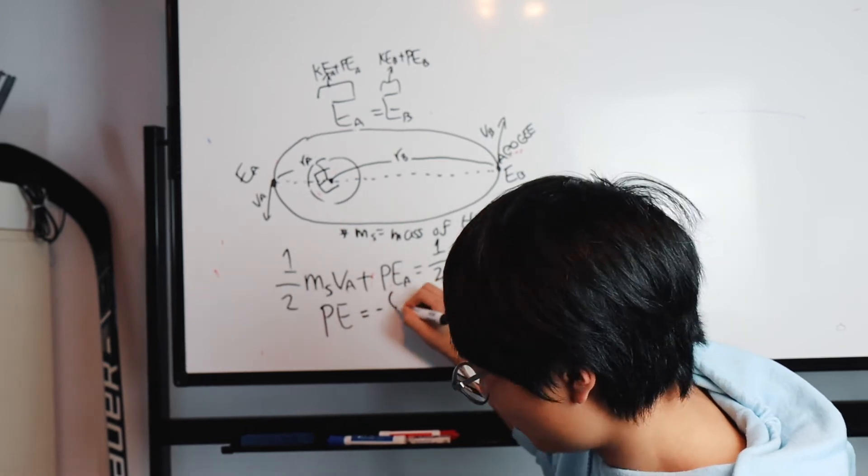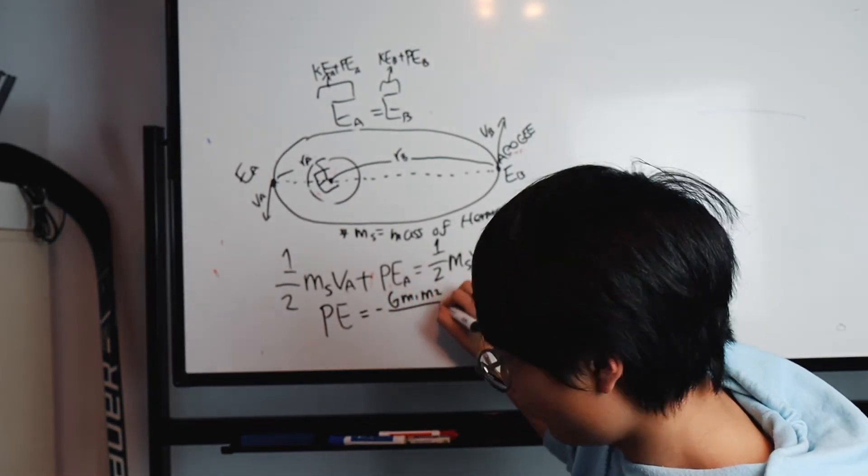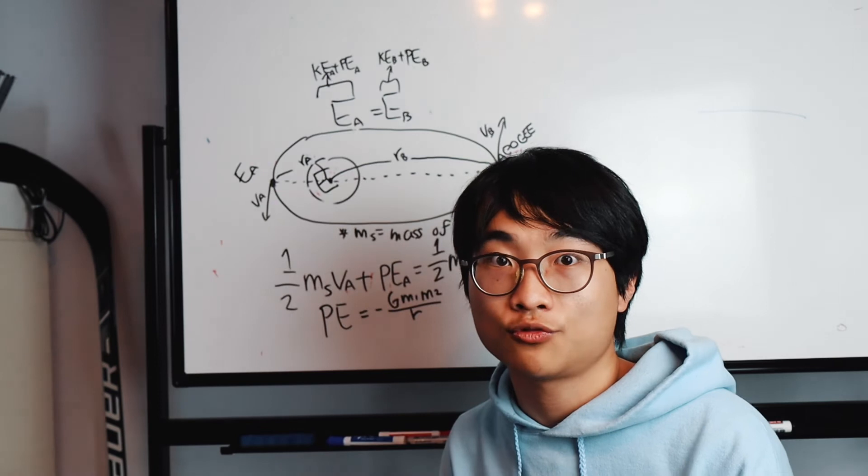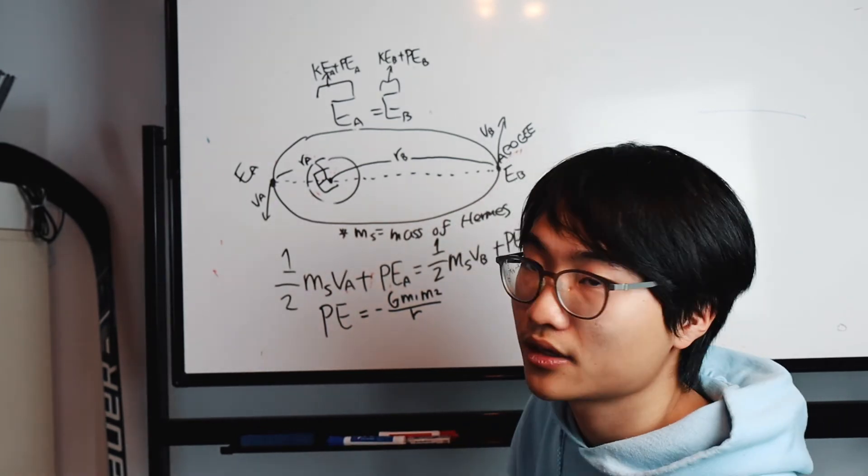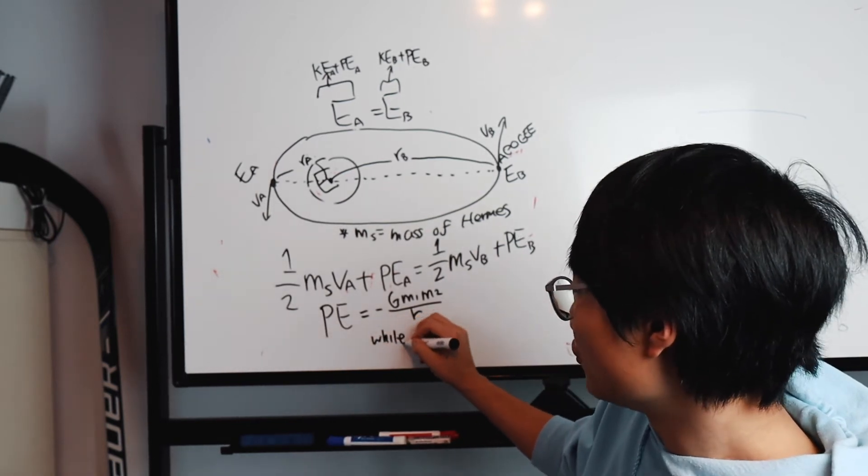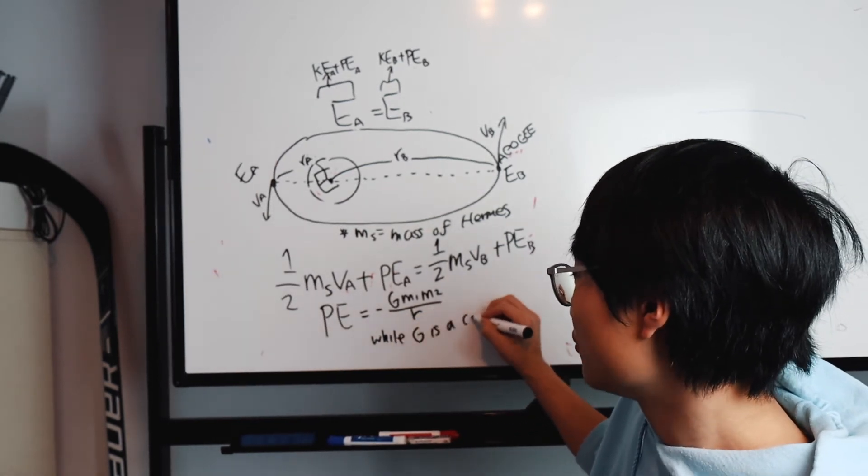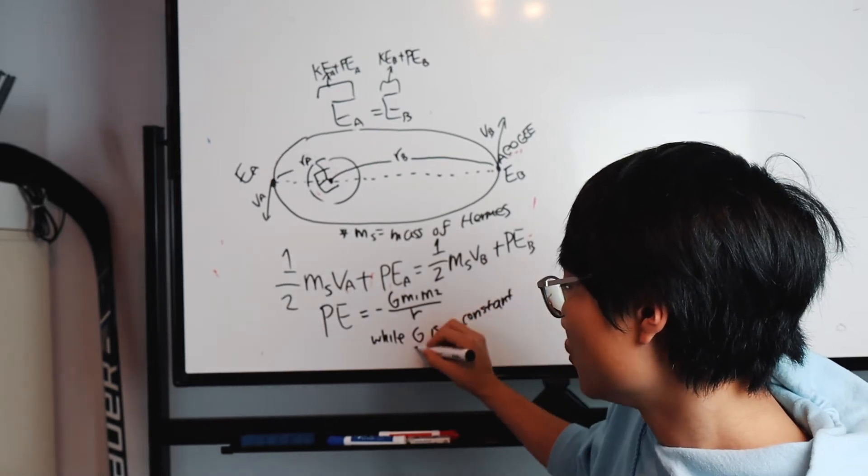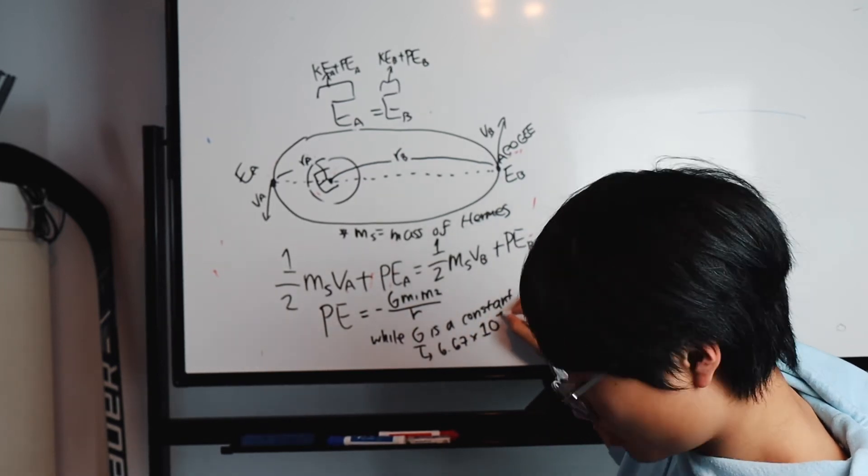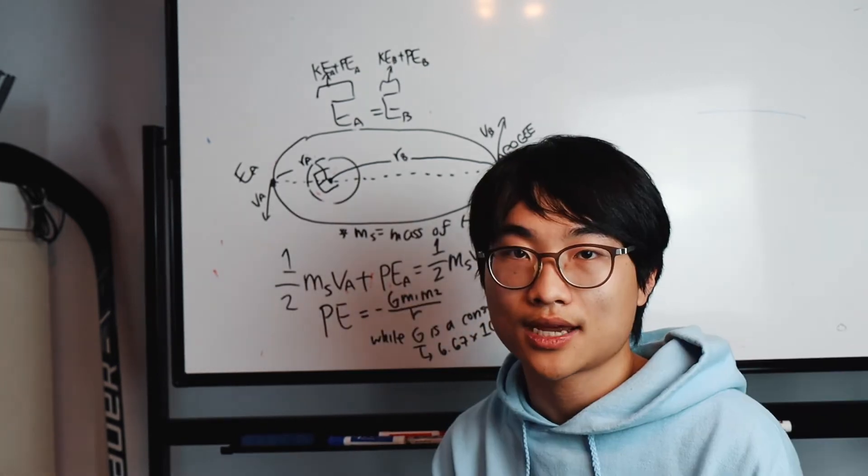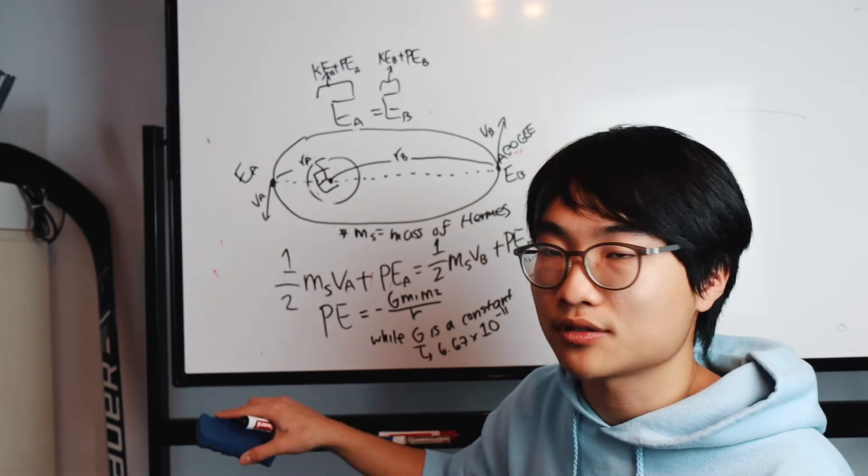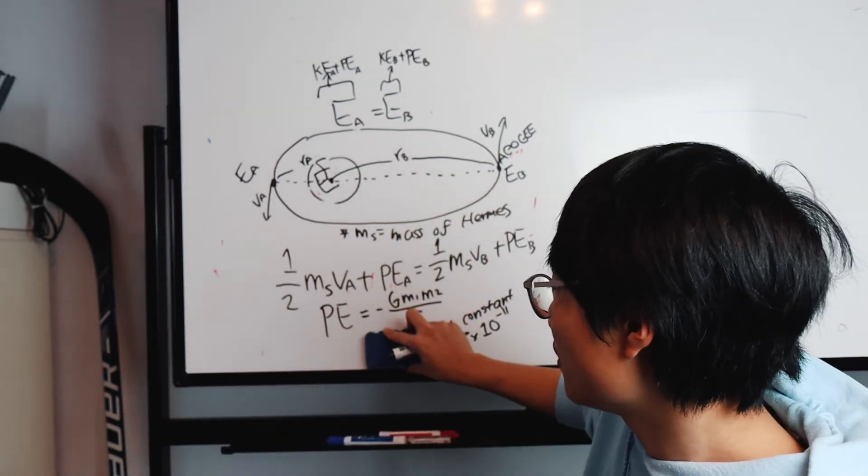We explored that potential energy, the universal potential energy, is negative G mass 1 mass 2 over R. G is a constant which is 6.67 multiplied by 10 to the power of negative 11. This is how you calculate the potential energy of an object in orbit of a celestial object, since MGH is only applicable to objects on the surface of a planet.